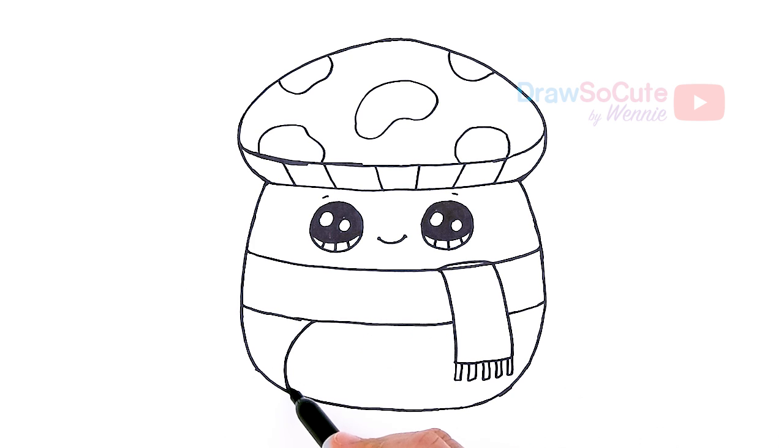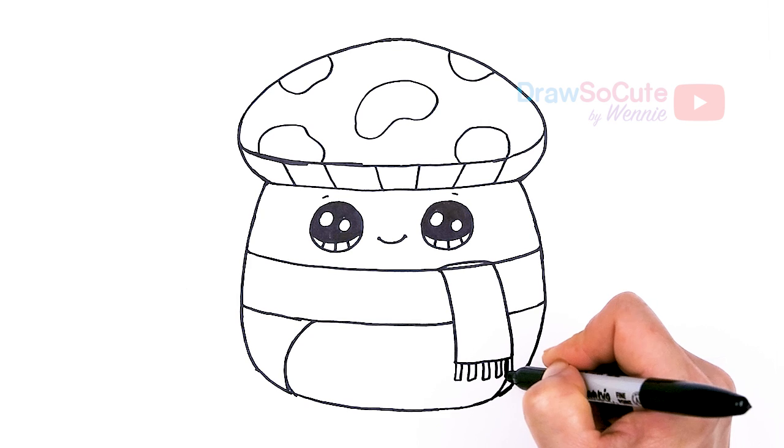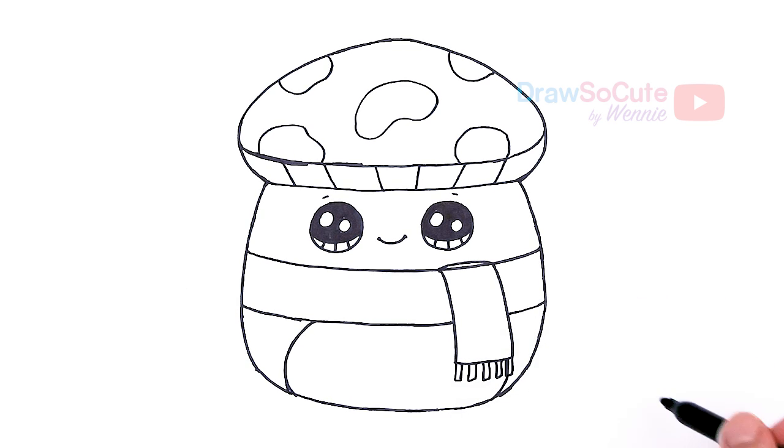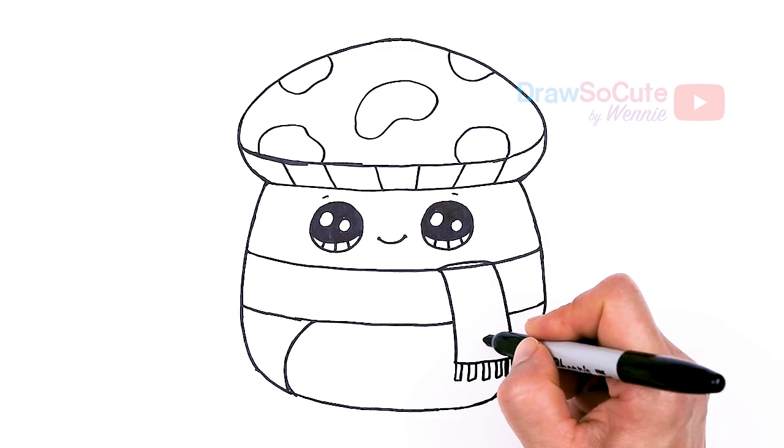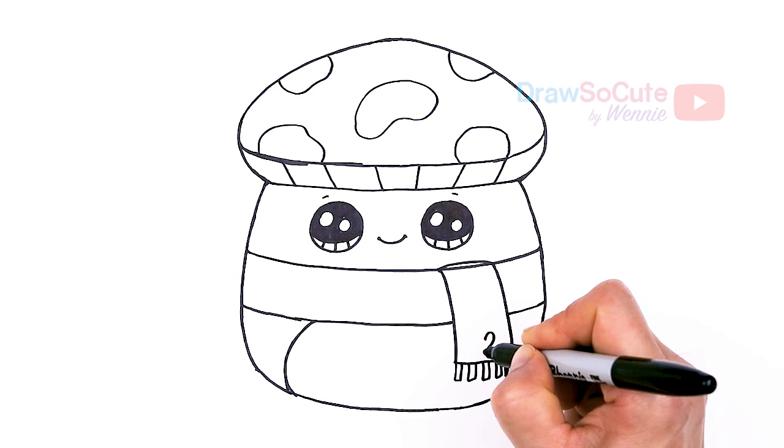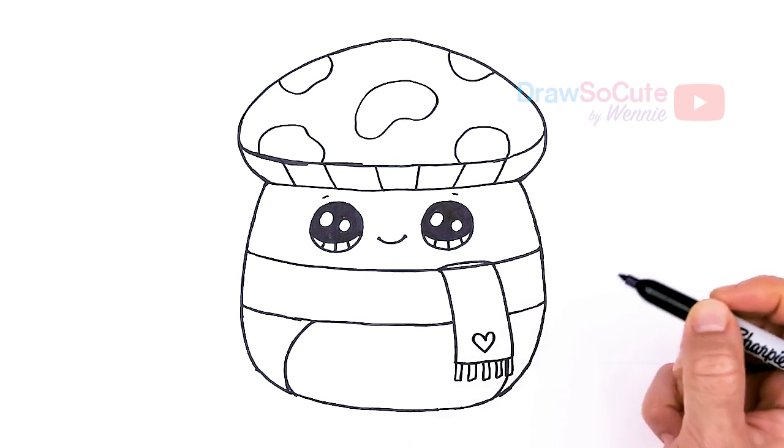The tummy area, and then just imagine it coming over and through. It should pop out about right here. So I'll just draw a little indication of it. And for our scarf I'm gonna add a heart right here to make it my draw-so-cute fall mushroom, of course.